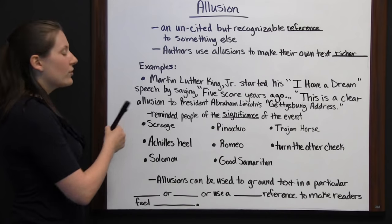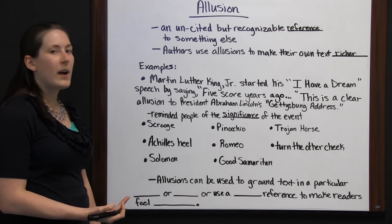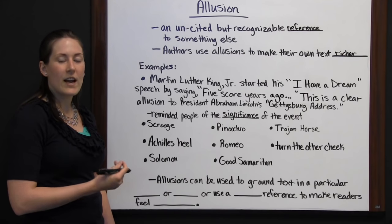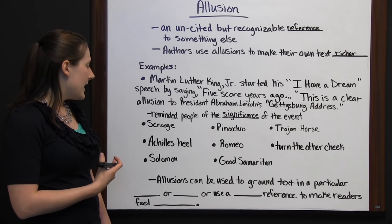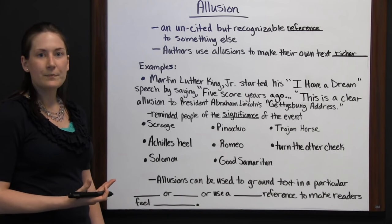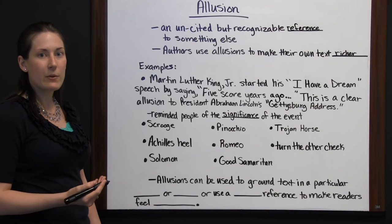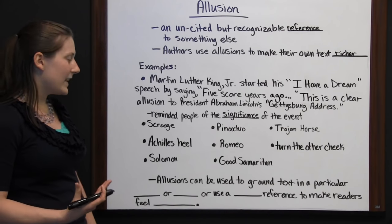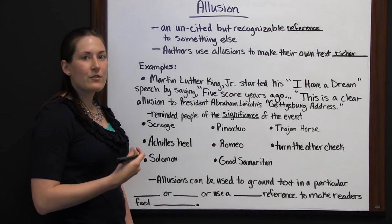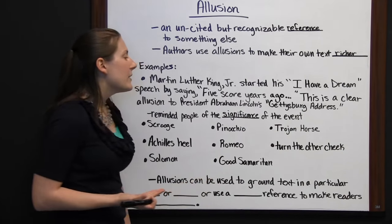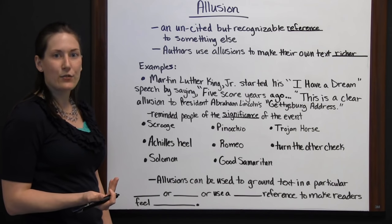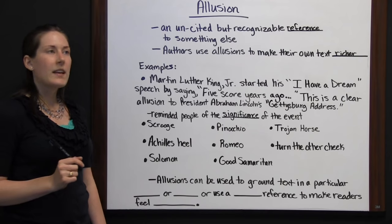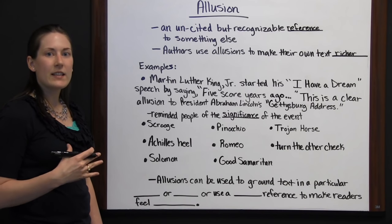Let's look at some other allusion examples. If someone is referred to as 'Scrooge,' it refers to someone who is not very generous — kind of miserly, they don't like to share — from A Christmas Carol. 'Pinocchio' is a reference to someone who is lying. A 'Trojan horse' means something that is a trick — it looks like the real thing, but there's a trap concealed inside. An 'Achilles heel' is a reference to Achilles from Greek mythology — his one weak spot.